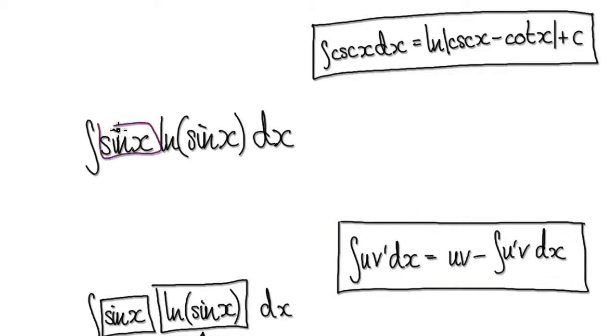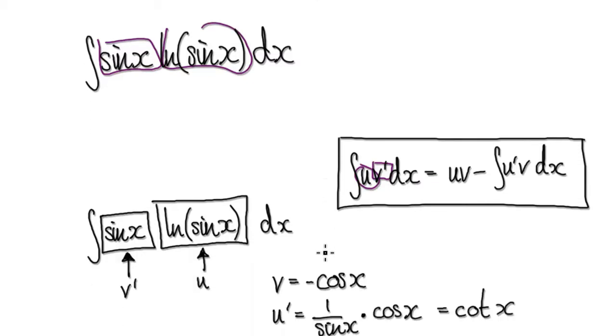So let this be v prime, and then let this thing here be u. So let this thing here be v prime, and let this thing here be u.